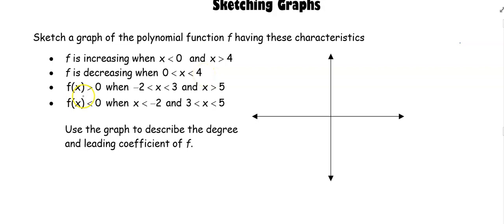f of x is greater than 0. Let's think about this. f of x is greater than 0, remember this is y, that means my graph is above the x-axis. When we say that y is below 0, that means this is when my graph is below the x-axis.